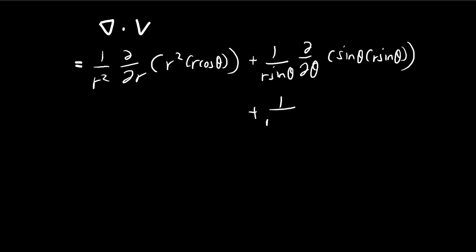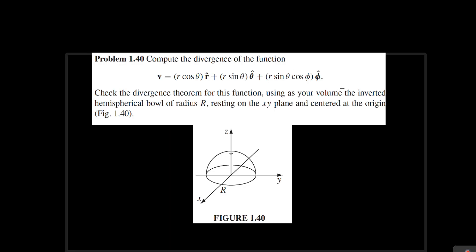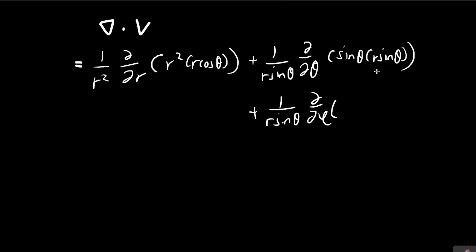And then the last component, the phi component, will be equal to just this component itself. So all we have to do is just to write this down. Sine theta cosine phi.